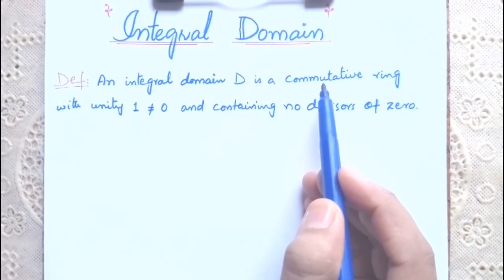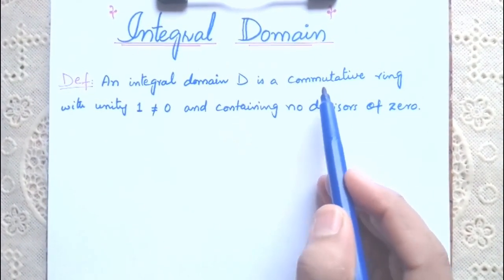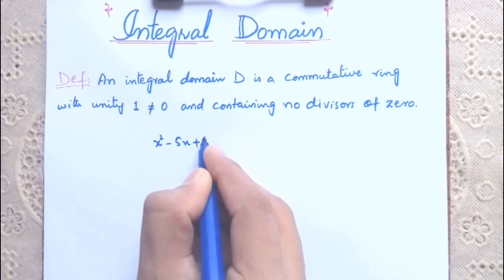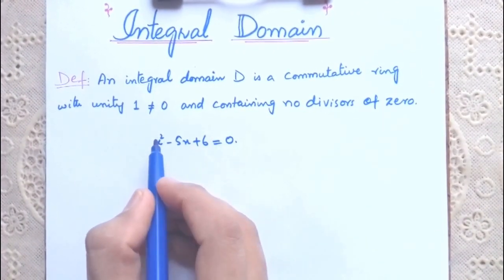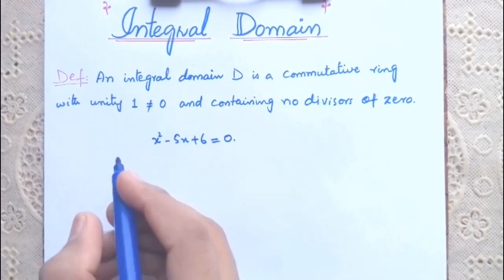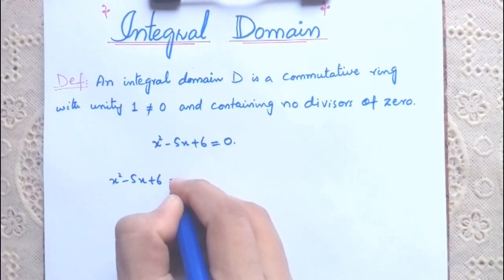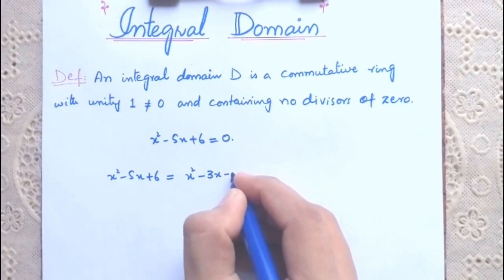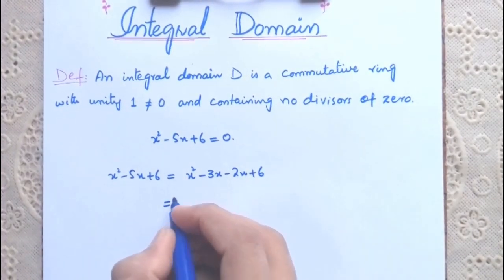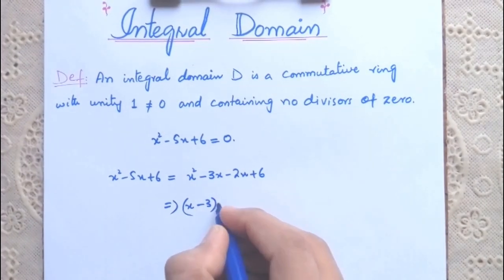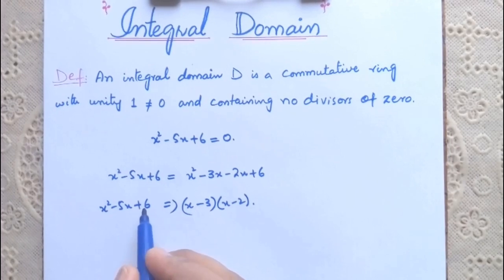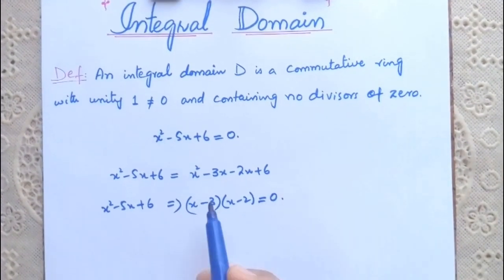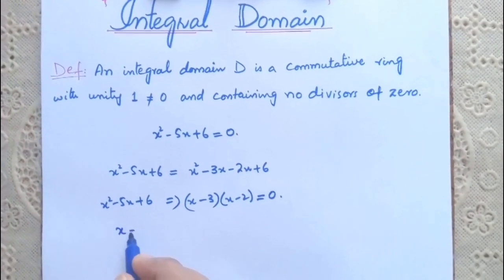— a ring in which multiplication is commutative is called a commutative ring. Now let me talk about zero divisors. Let's suppose we are asked to solve the equation x² - 5x + 6 = 0. We will factor the left-hand side: x² - 5x + 6 = (x - 3)(x - 2), so the equation becomes (x - 3)(x - 2) = 0.